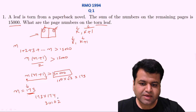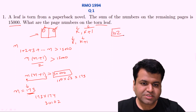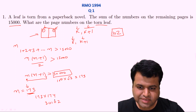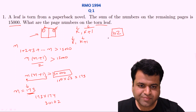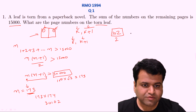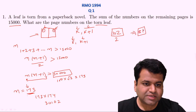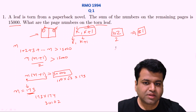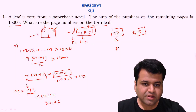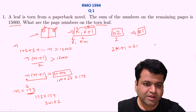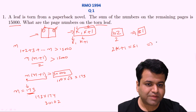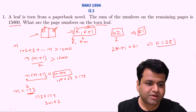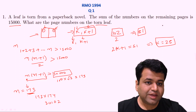The additional sum beyond 15,000 is 30,102/2 — dividing n(n+1)/2 gives us 15,051, so the extra sum is 51. This extra sum is from the torn leaf. If the leaf has pages K and K+1 with K odd, then 2K+1 = 51, which gives K = 25. So the torn leaf has page numbers 25 and 26.